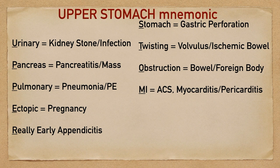M stands for MI. This will help you remember that there are cardiac causes that can lead to upper abdominal pain. This could include things like acute coronary syndrome, but M also stands for myocarditis. This will help you remember the realm of myocarditis and pericarditis that could lead to upper abdominal pain as well. So the point is, don't forget about the heart — there are cardiac causes that can lead to abdominal pain.